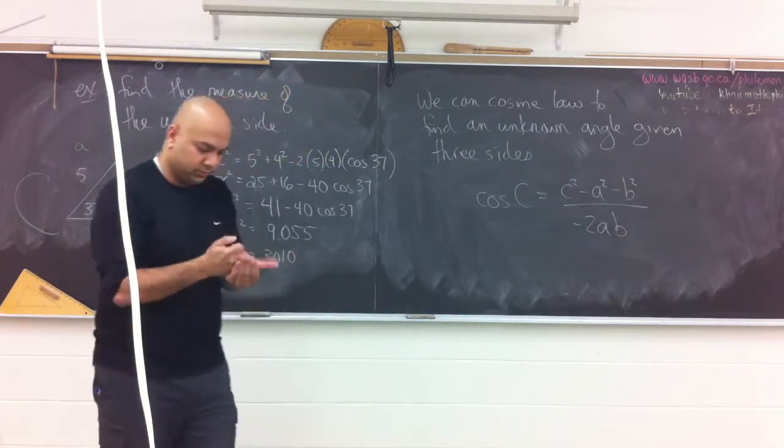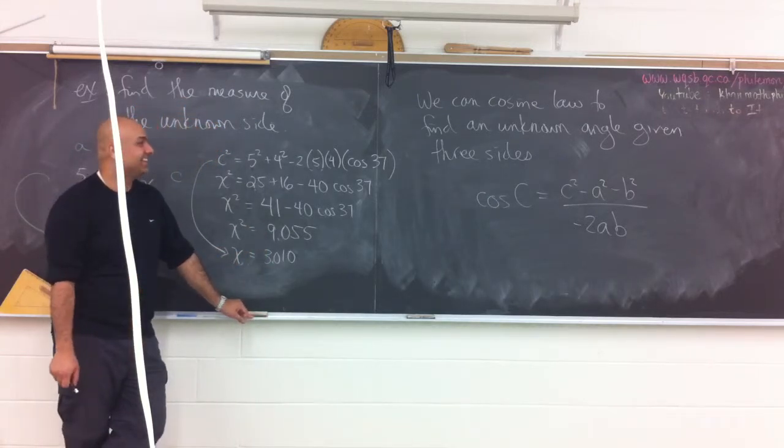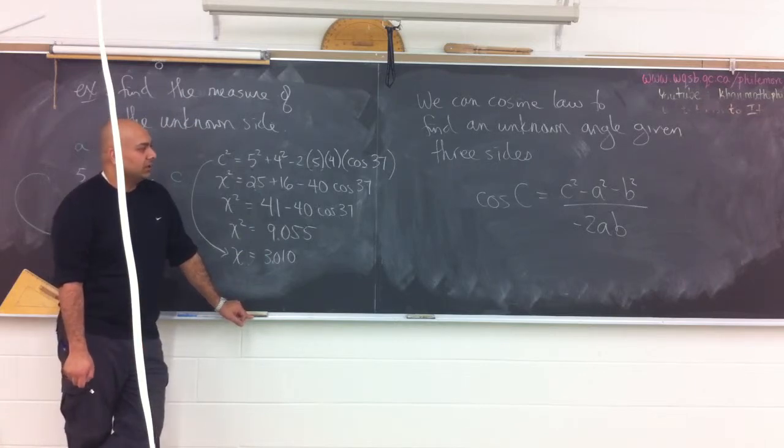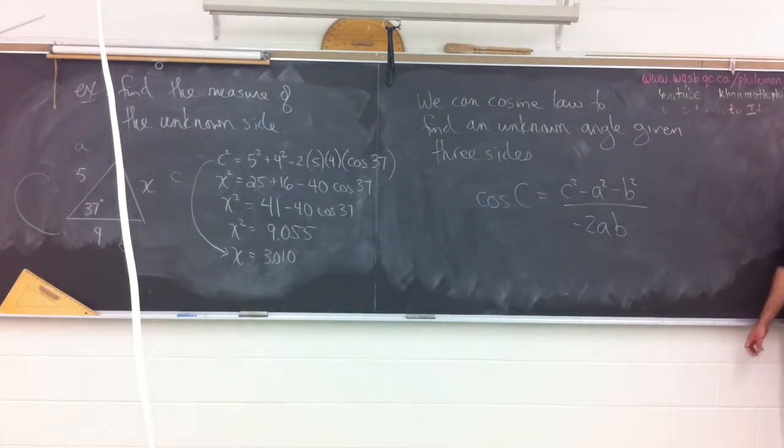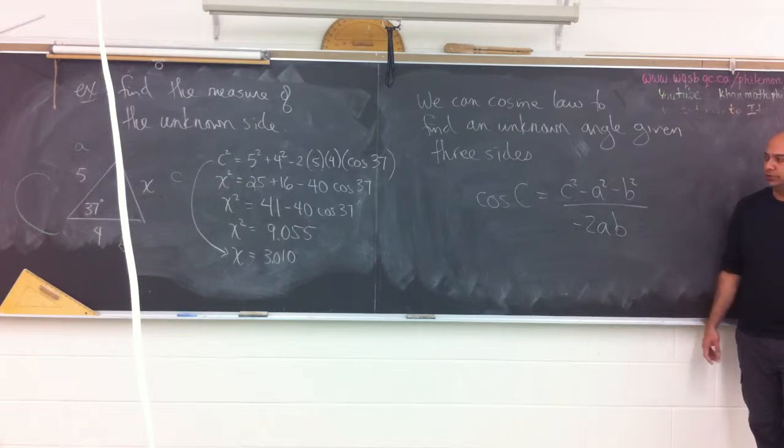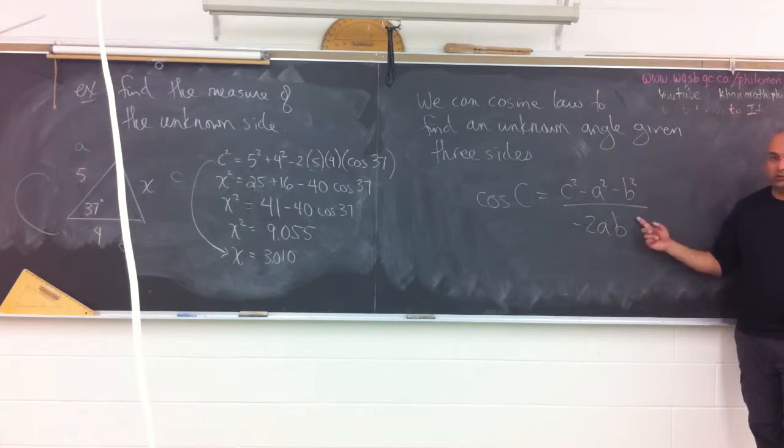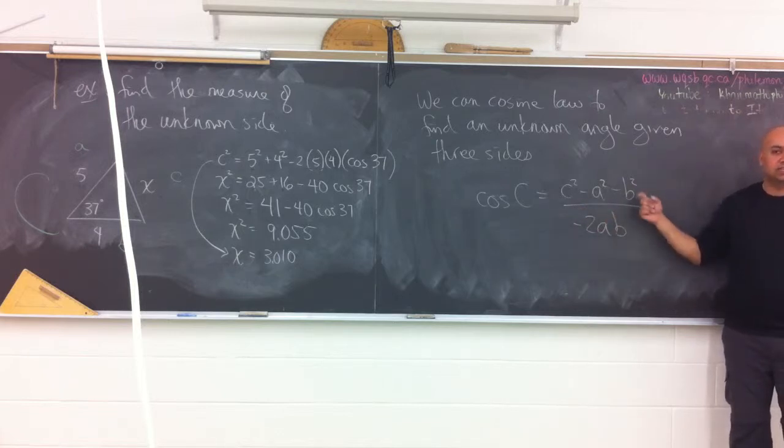We can use the cosine law to find an unknown angle given three sides. Almost like this. Cosine C is equal to c squared minus a squared minus b squared, all divided by negative 2ab. This by itself is a lot more powerful. Because often times we don't know an angle measure. In practicality, if we had a triangle in the physical world, you wouldn't go around with a protractor and start measuring angles everywhere. What you would know is that you could physically measure three sides of the triangle.